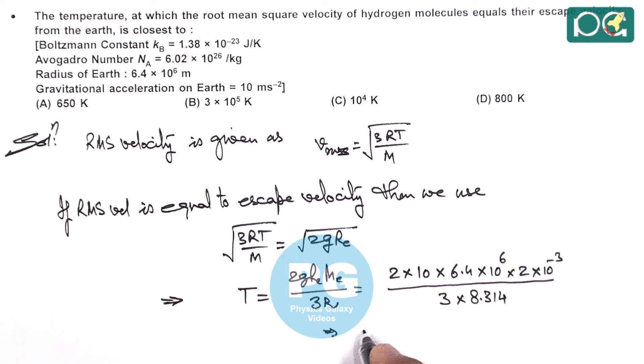So here we are getting the temperature value to be approximately 10 multiplied by 10 to power 3 which is equal to 10 to power 4 Kelvin which matches closely with option C in the question.